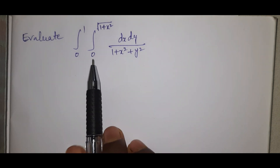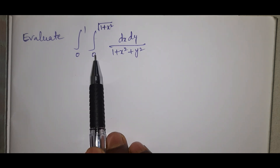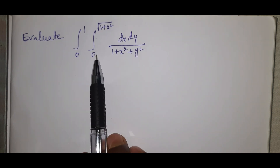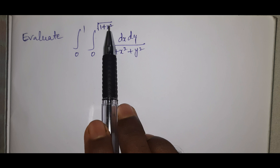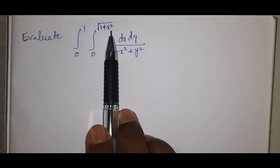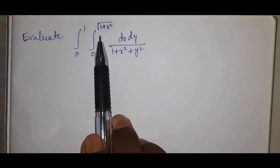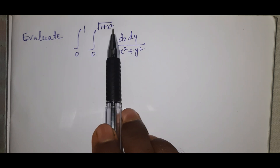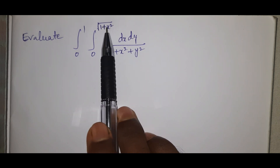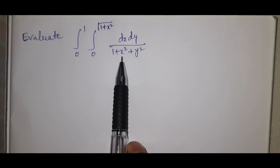In the second integral, the upper limit involves x. The y-limit is 0 to √(1+x²). Notice that 1+x² appears in both the upper limit of y and in the denominator of the integrand.